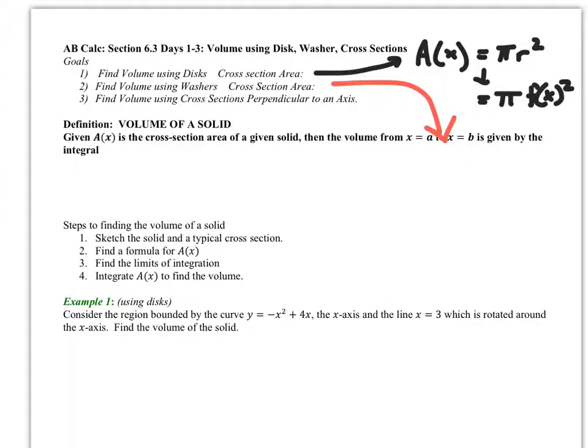Using this area function pi r squared, which ended up turning into pi times f(x) squared in most cases. Today, what we're going to have is a new area function.